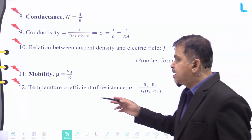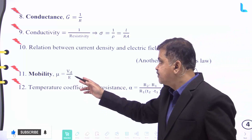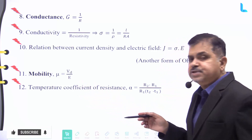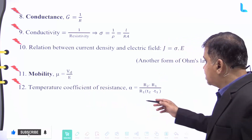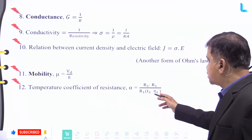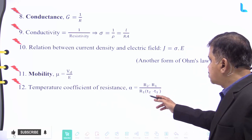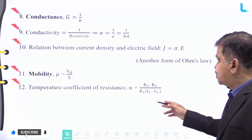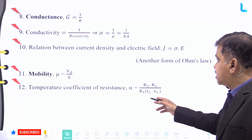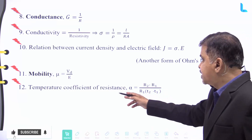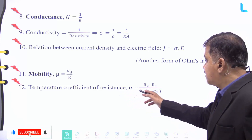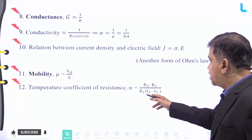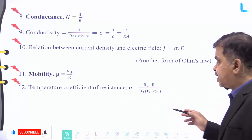The mobility μ is given by drift velocity divided by E. The temperature coefficient of resistance α is given by (R₂ − R₁) divided by R₁ × (T₂ − T₁).